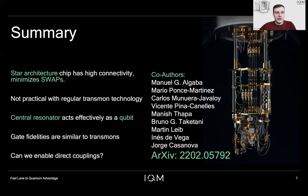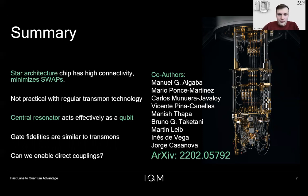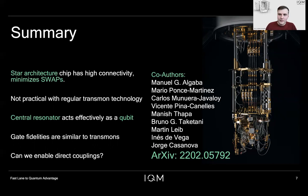In conclusion, a star architecture chip has high connectivity and minimizes the swaps needed for simulating nanoscale NMR problems. It is not practical to build a star architecture using regular transmon technology, so instead we place a central resonator that effectively acts as a qubit through the operating protocol shown. The gate fidelities between the qubit and the resonator are similar to those between transmons, so we believe this is a working solution that creates this new qubit topology.